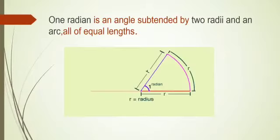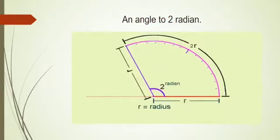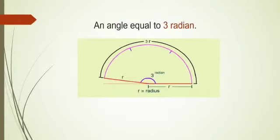1 radian is an angle subtended by 2 radii and an arc all of equal length. An angle equal to 2 radians. Here is an angle equal to 3 radians.